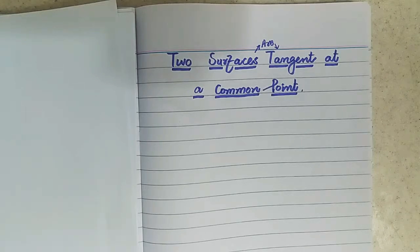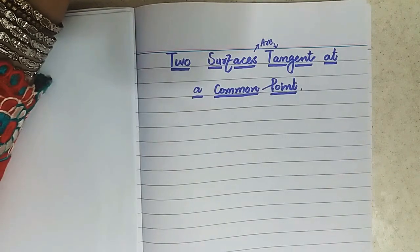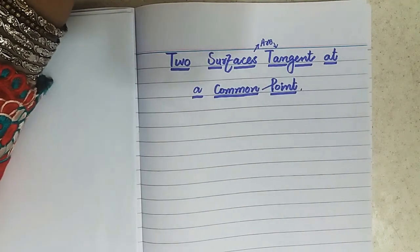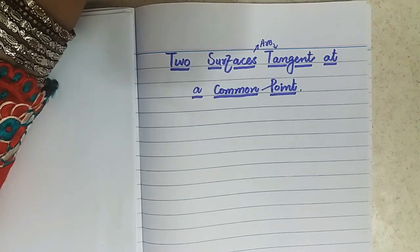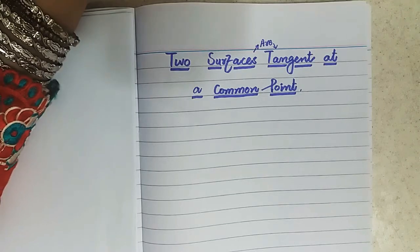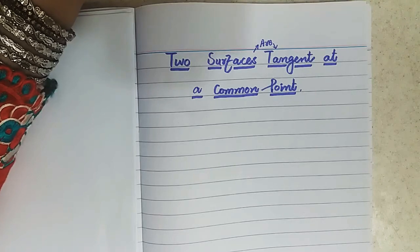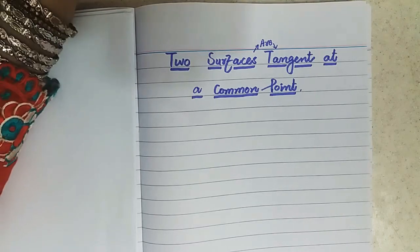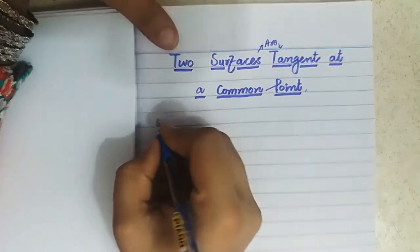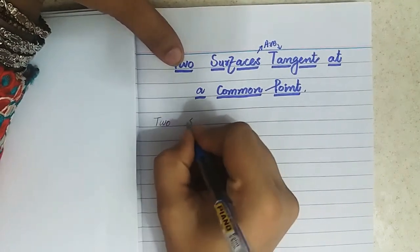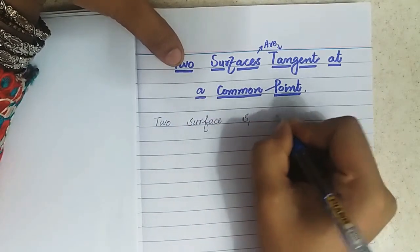In the previous lecture we discussed how equations of tangent and normal can be found for functions with multivariate variables. In today's lecture we will discuss that two surfaces are tangent at a common point. Two surfaces S1 and S2 are said to be tangent at a common point if each surface has the same tangent plane equation at that given common point.